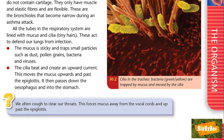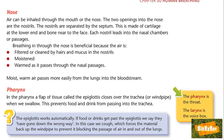Turning to page 339 — nose. Air can be inhaled through the nose or mouth. The two openings into the nose are called the nostrils, separated by the septum — from Latin meaning 'separate' — the same word that divides the heart in two. This is made of cartilage at the lower end and bone near the face. Each nostril leads into the nasal chambers or nasal passages.